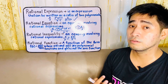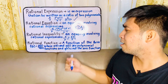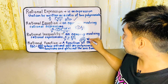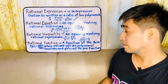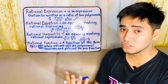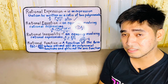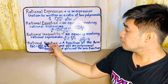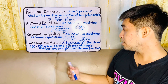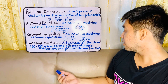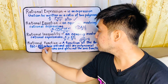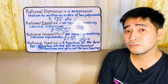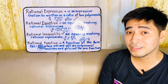And for the last one, that is the rational function. When we say function, it now deals with f(x) — it deals with y. Kapag nakakita ka ng f(x), that is just equal to y. A rational function is of the form f(x) = p(x) over q(x), where p(x) and q(x) are polynomial functions, and q(x) is not the zero function. Sinabi sa atin that q(x) should not be a zero function, kasi kapag nag-zero yung denominator, it becomes undefined.